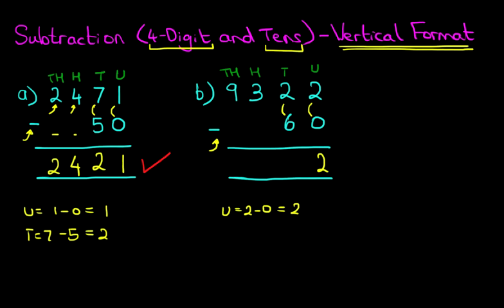Next, we have the tens column. We've got 2 minus 6. Well, that's something we cannot do because 2 is less than 6. You know the routine by now — we're going to take 1 from the hundreds to the left. So, we're going to cross out the 3. 3 minus 1 is 2. And the 1 we have taken from there, we're going to add it to the tens column. Therefore, the tens has now become 12 minus 6. And 12 minus 6 is 6.